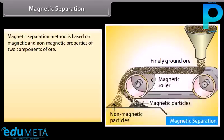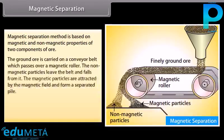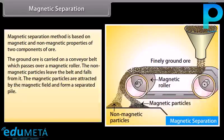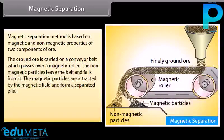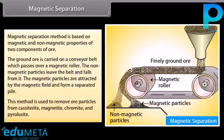Magnetic separation: This method is based on the magnetic and non-magnetic properties of the two components of the ore. The ground ore is carried on a conveyor belt which passes over a magnetic roller. The non-magnetic particles leave the belt and fall off, while the magnetic particles are attracted by the magnetic field and form a separated pile. This method is used to remove ore particles from cassiterite, magnetite, chromite and pyrolusite.